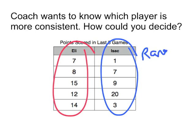So the range for Isaac, well, his best game was 20, minus his worst game of 1. So he had 19. That's his range.